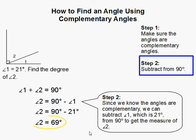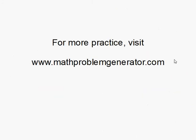And that gives us 69 degrees. So angle 2 is equal to 69 degrees. And that completes our problem. Thank you.